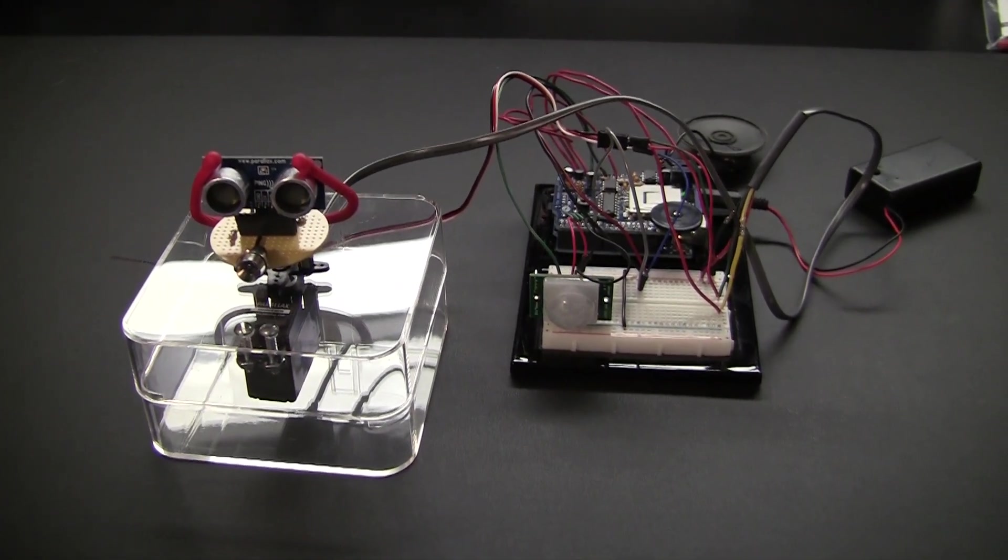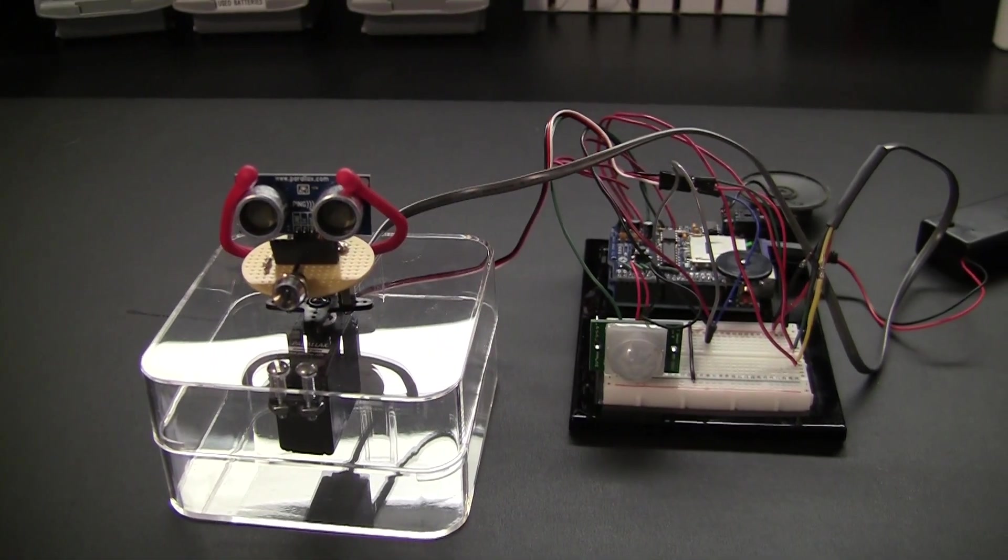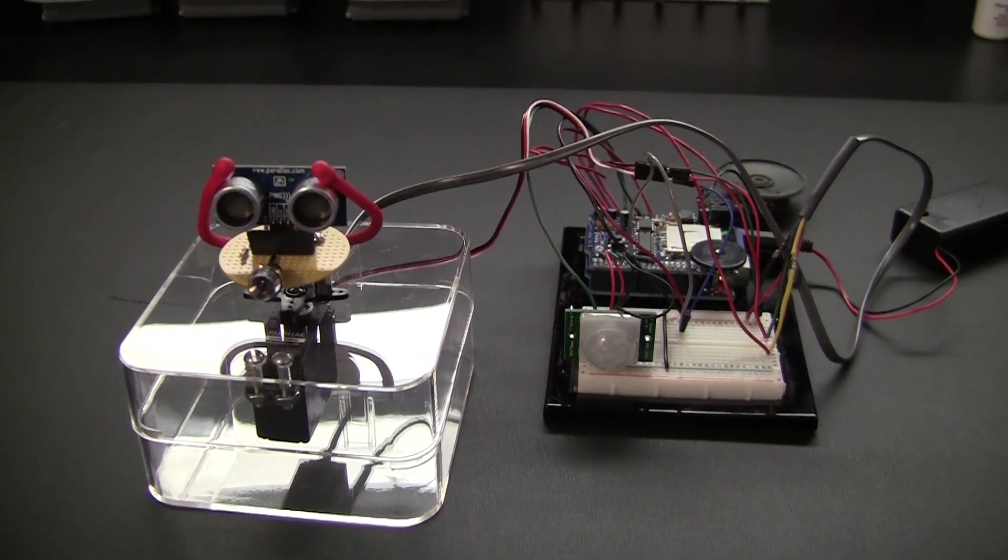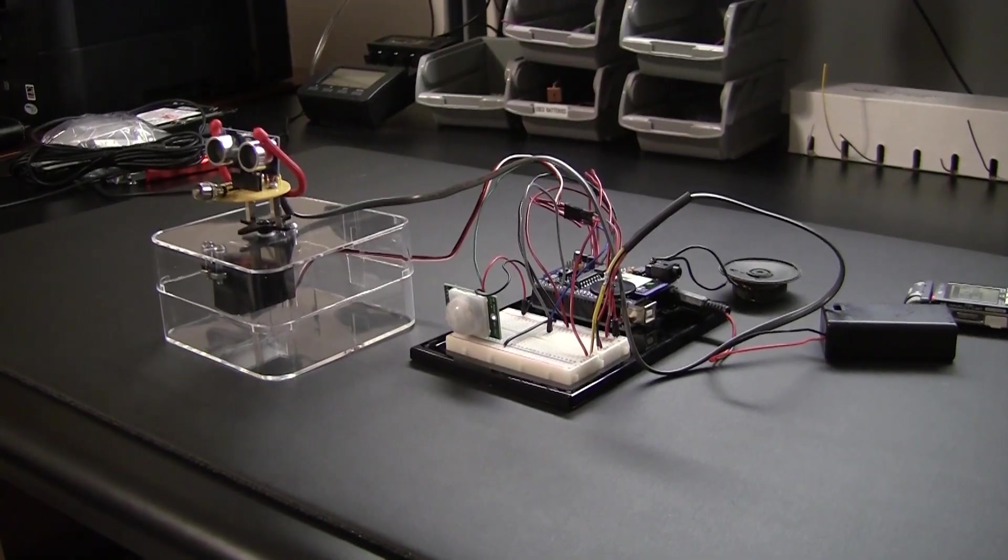And when it does find the target it will lock on and this red LED in the front will glow and it will start shooting its main guns. And then when the target is no longer detected it will go into sleep mode. So let's see how that works.